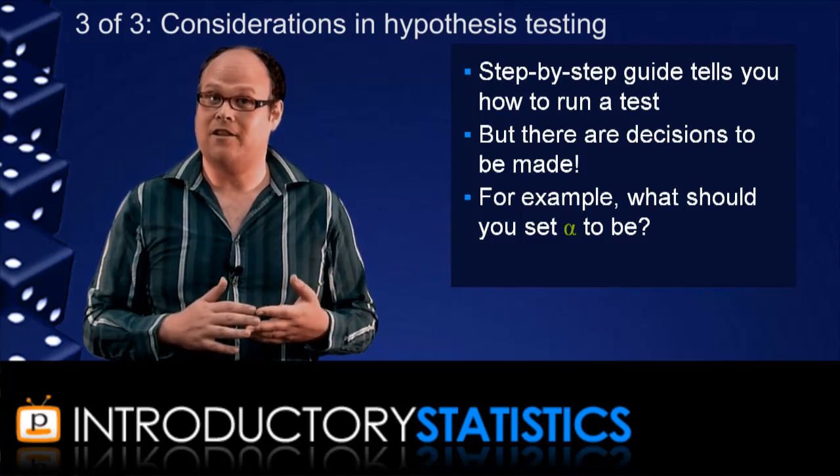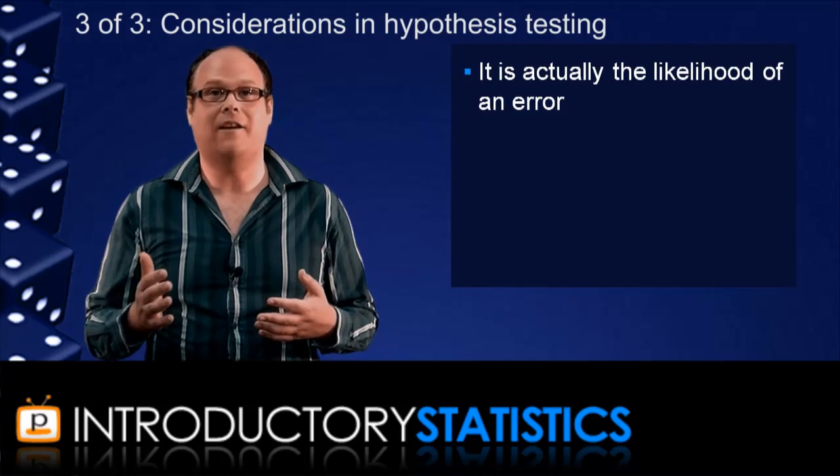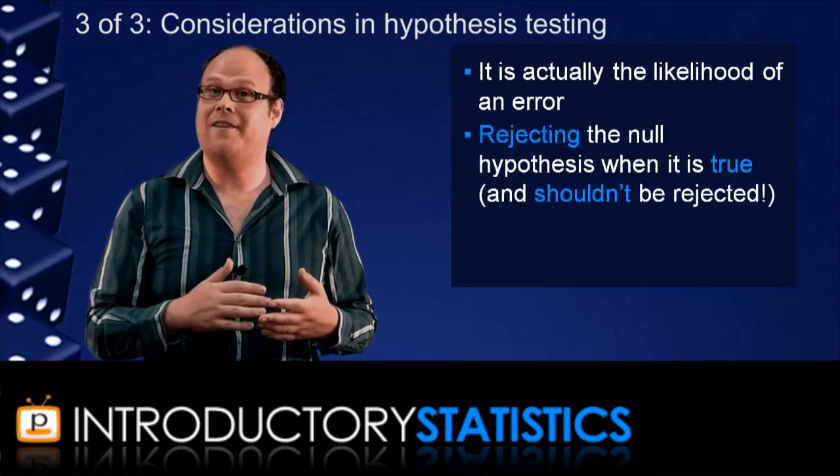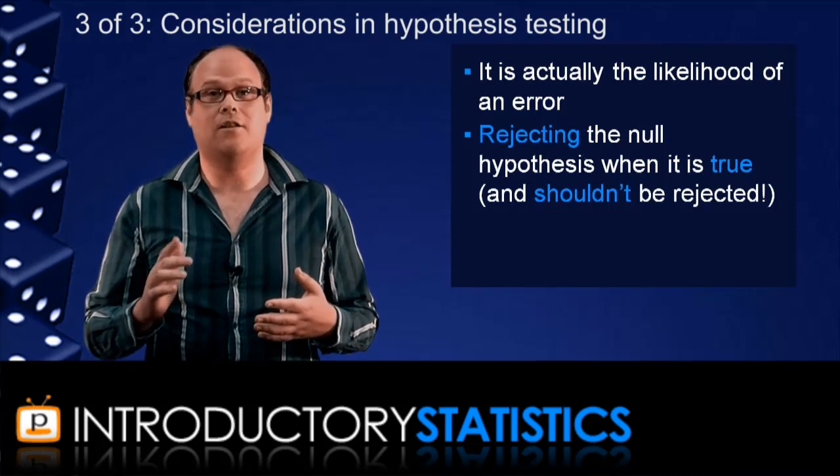Well, one thing that will affect your decision is that alpha is actually the probability of committing a kind of error in the test. In particular, it's the probability of rejecting the null hypothesis when it's true and shouldn't be rejected. This is known as a type 1 error.